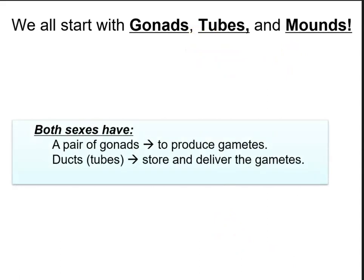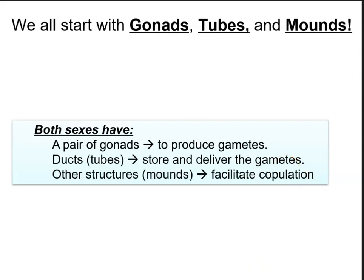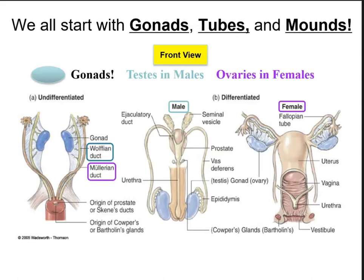Both sexes will have a pair of gonads needed to produce gametes. Males have testes while females have ovaries. Both sexes will also have ducts or tubes that store and deliver gametes produced by the gonads. Other structures such as mounds help facilitate copulation. Here we see an anterior view of our gonads. Before the fetus becomes differentiated, it's known as undifferentiated — we have rudimentary structures that will form the gonads.